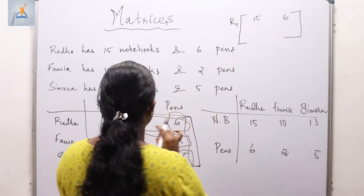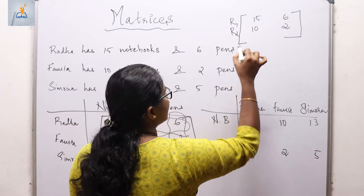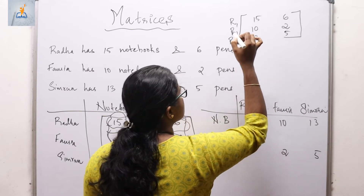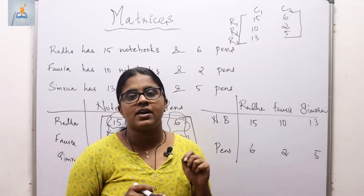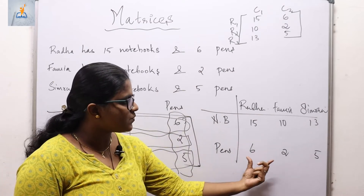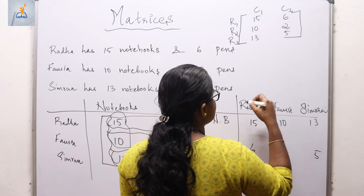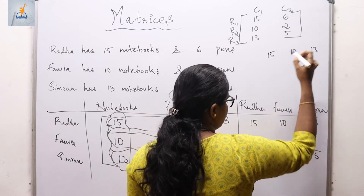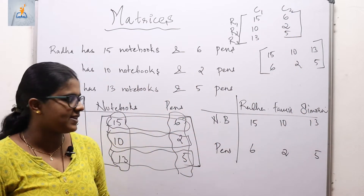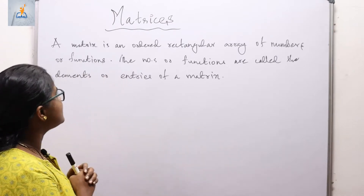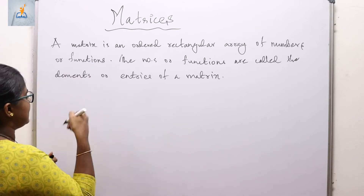The first row contains 15 and 6 (called R1), the second row contains 10 and 2 (R2), and the third row contains 13 and 5. There are three rows and two columns (C1 and C2). This rectangular representation is called a matrix. We can also write it as [15 10 13 / 6 2 5], which is a different matrix but represents the same situation. The definition: a matrix is an ordered rectangular array of numbers or functions.